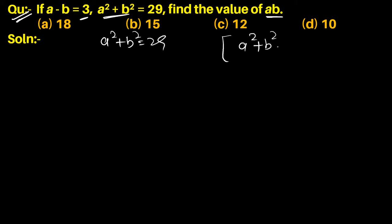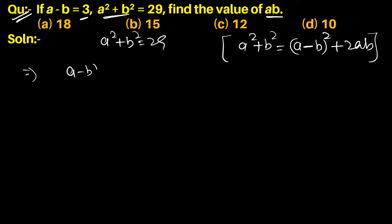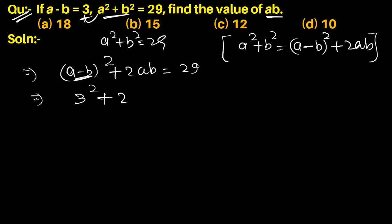So, a squared plus b squared equals a minus b whole square plus 2ab. This implies that a minus b whole square plus 2ab equals 29. The value of a minus b is 3, so 3 squared plus 2ab equals 29, which gives us 9 plus 2ab equals 29.